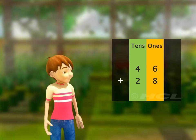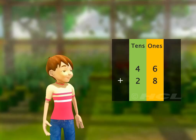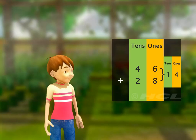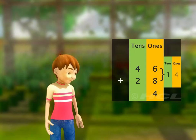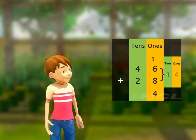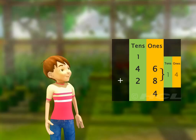We always start adding from the ones column. Adding 6 and 8 in the ones column, we get 14. The number 14 has 4 at the ones place, so we write 4 in the ones column of the answer. Next, we place 1 from the tens place in number 14 as carryover in the tens column of the sum.